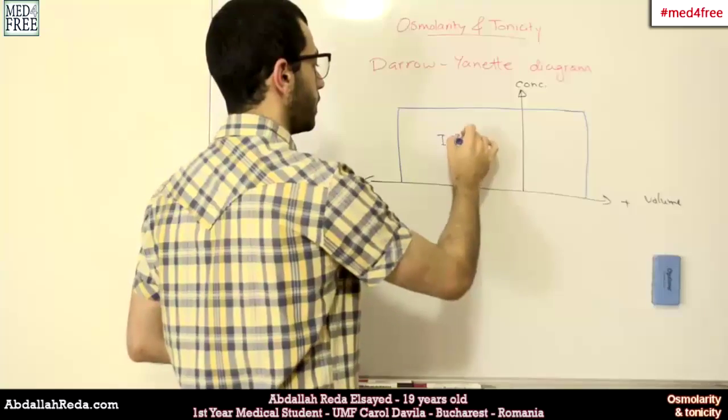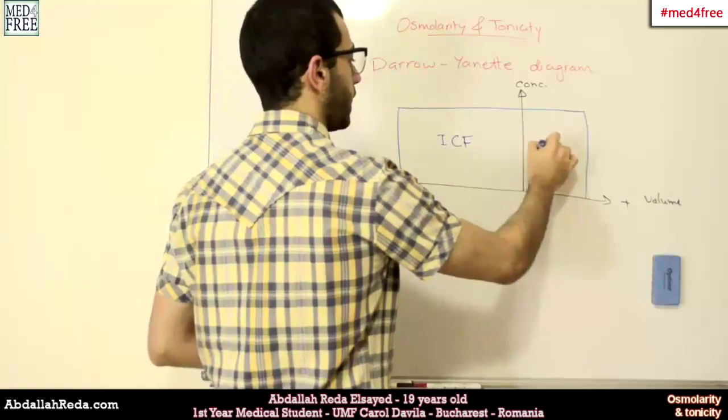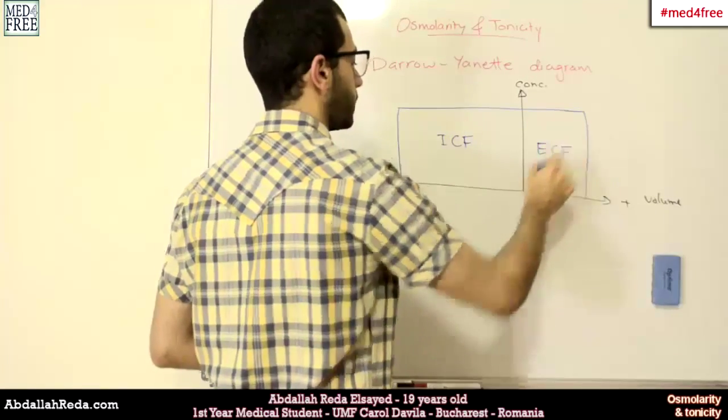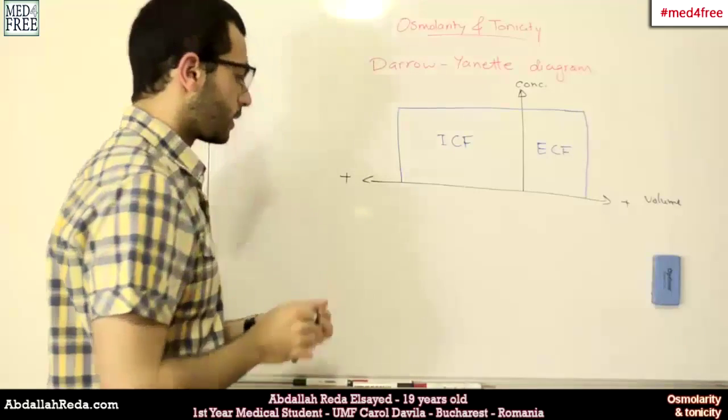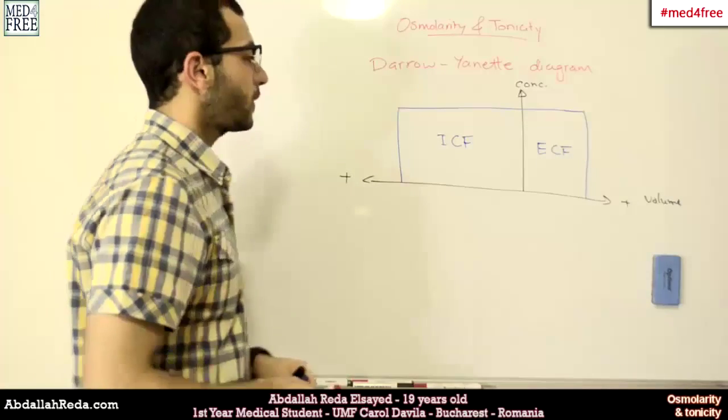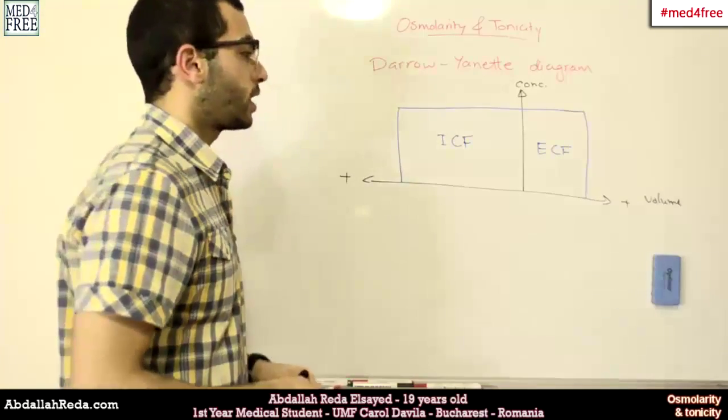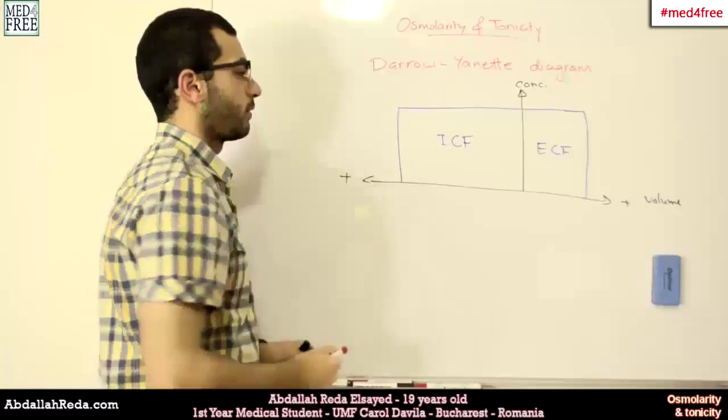We will have our two main compartments divided as two-thirds and one-third. This is intracellular fluids, and this is extracellular fluids. Then, when a change happens, we will map it on this diagram.